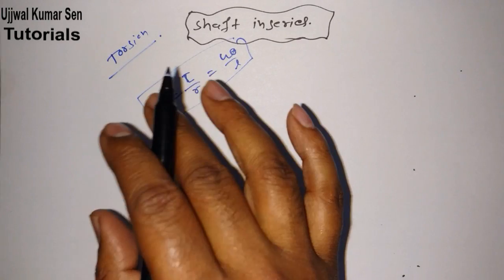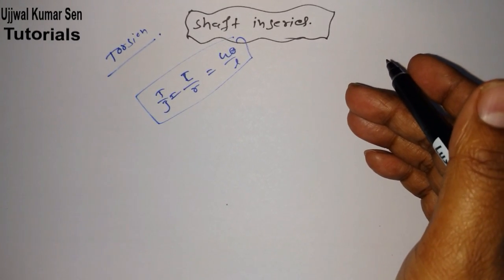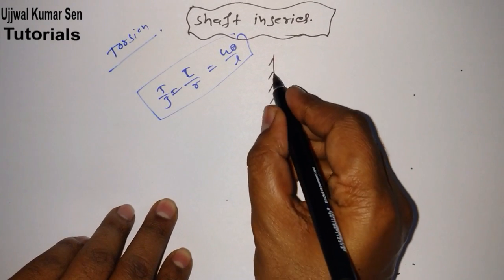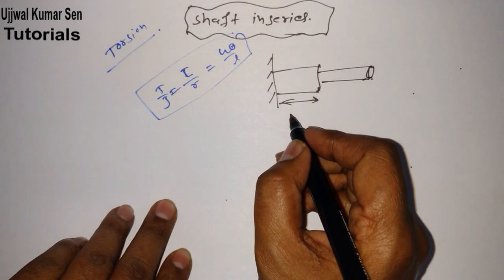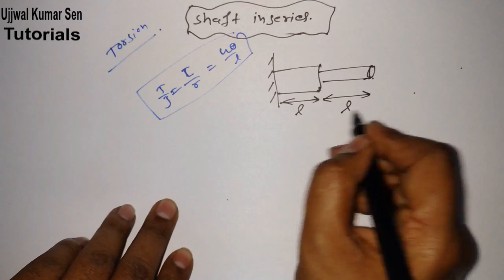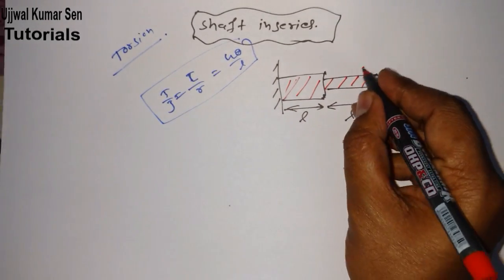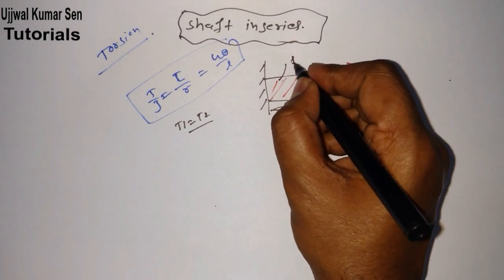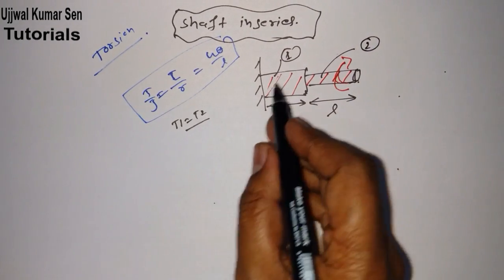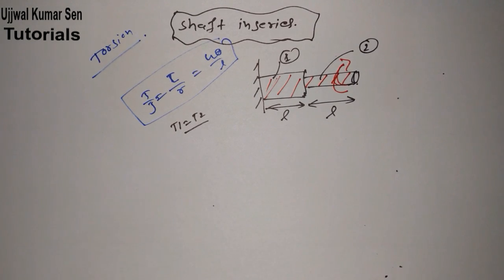Now let's go to our topic: shaft in series. Suppose we have shaft one and shaft two, both having equal length L. When shafts are in series, the torque is the same — meaning the torque in shaft one is equal to the torque in shaft two.